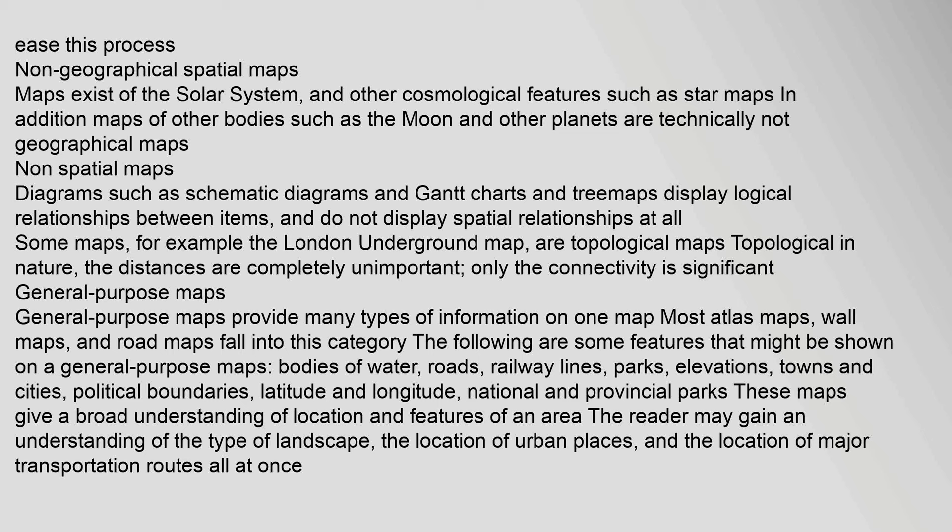General purpose maps provide many types of information on one map. Most atlas maps, wall maps, and road maps fall into this category. Features that might be shown on a general purpose map include: bodies of water, roads, railway lines, parks, elevations, towns and cities, political boundaries, latitude and longitude, and national and provincial parks. These maps give a broad understanding of location and features of an area. The reader may gain an understanding of the type of landscape, the location of urban places, and the location of major transportation routes all at once.